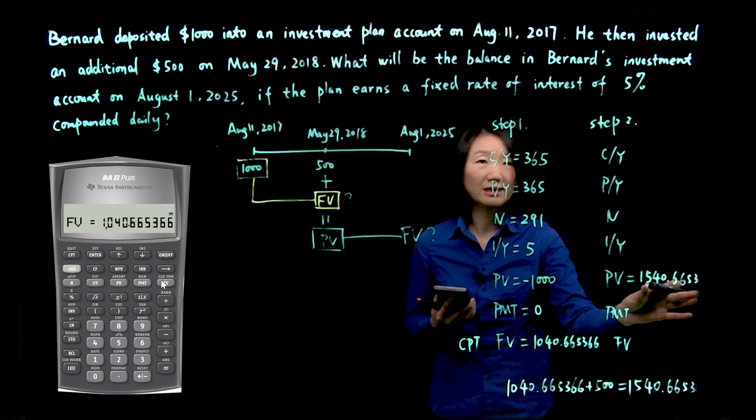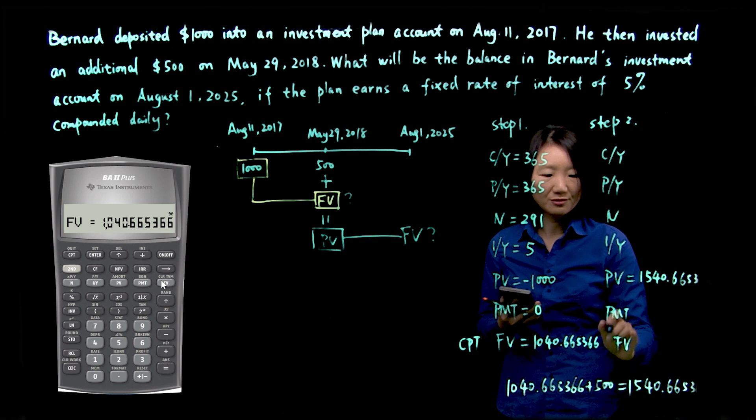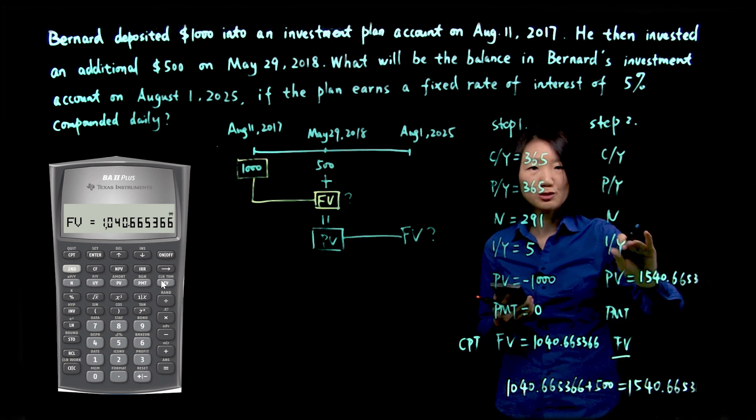So 1040.665366 plus $500. And that is where this PV comes from. PMT is still zero. We need to compute future value. Interest rate is the same.